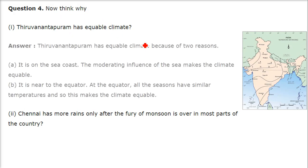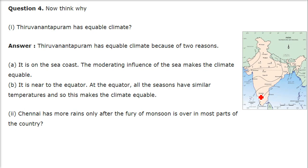Thiruvananthapuram has equable climate. First of all, Thiruvananthapuram is on a sea coast — the moderating influence of the sea makes the climate equable. And it is near the equator — we are at 8 degrees, so it's quite near to 0 degrees. At the equator, all the seasons have similar temperatures, so this makes the climate quite equable.